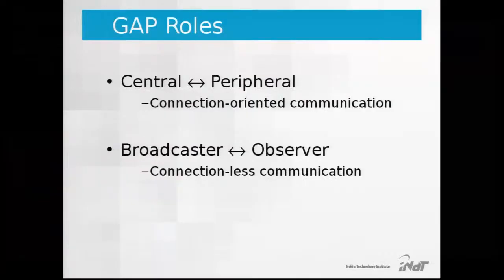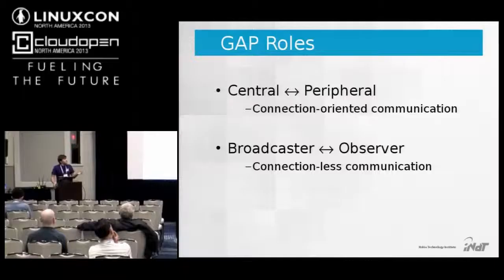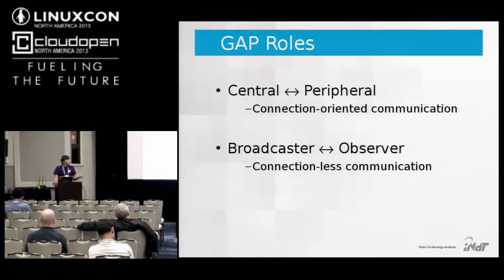The Generic Access Profile defines four roles: central and peripheral, which talk to each other in a connection-oriented way, and broadcaster and observer, which talk to each other in a connectionless way.